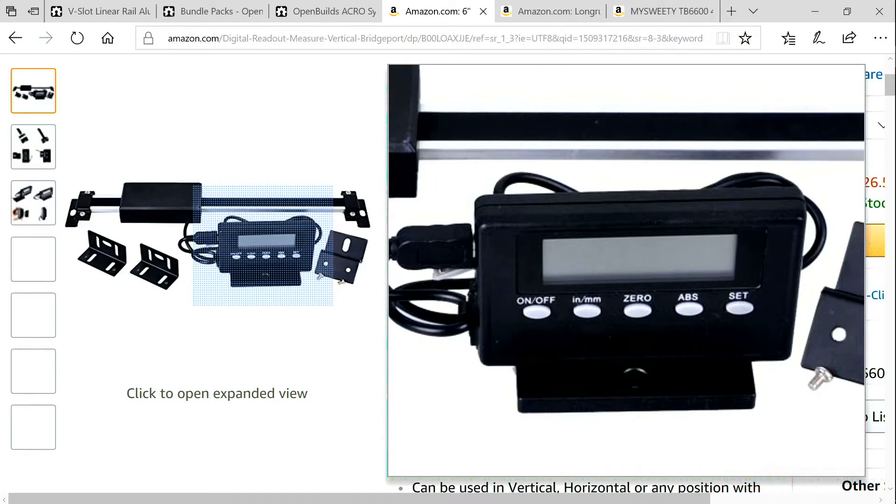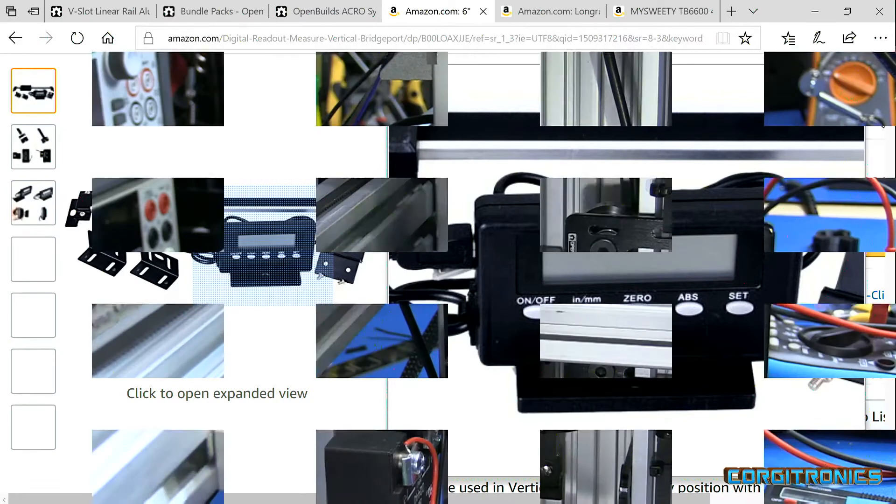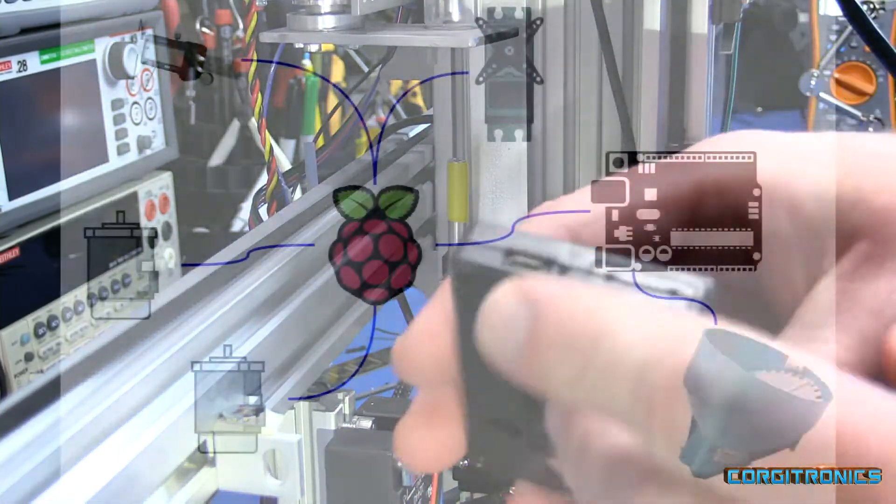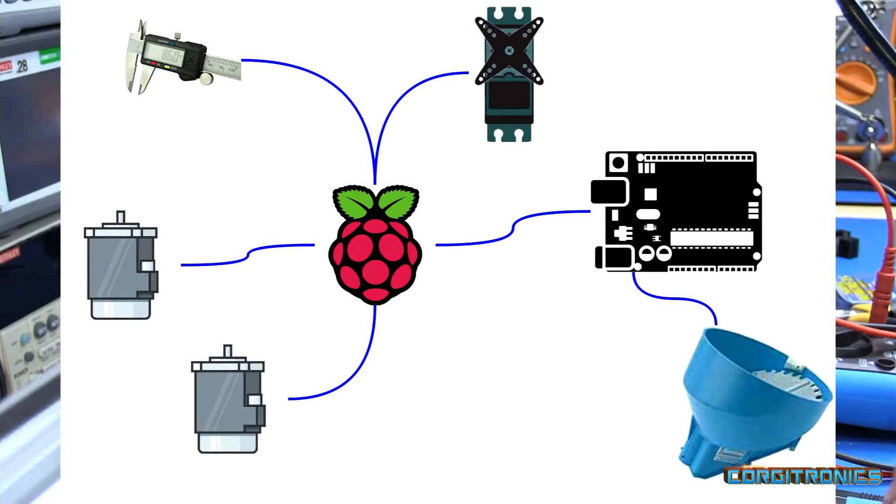That then is connected out to a display unit, and conveniently enough they used a micro USB connector. So with that, all I had to do was disconnect their head unit and plug it into my own circuit.